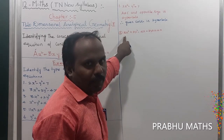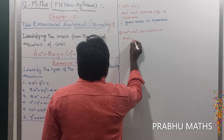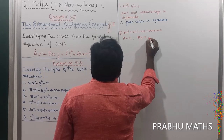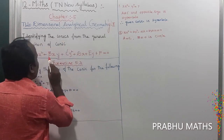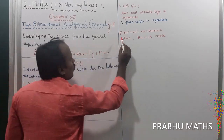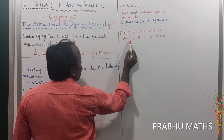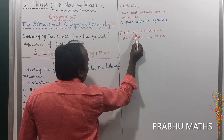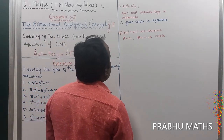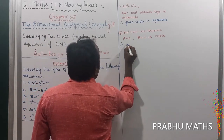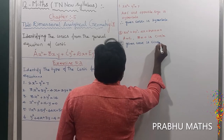This is not an ellipse and not a hyperbola. The condition here is a equals c, and b equals 0. b is the coefficient of the xy term, and this equation has no xy term, so b = 0. The coefficient of x² equals the coefficient of y², so a = c. Therefore, the given conic section is a circle.